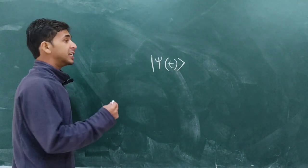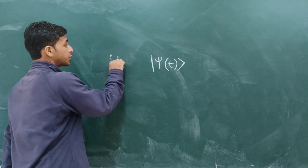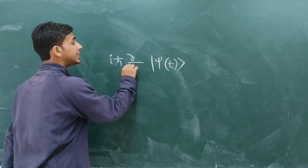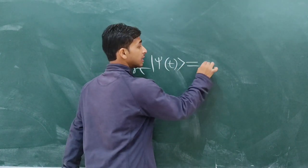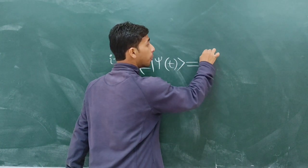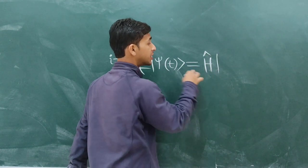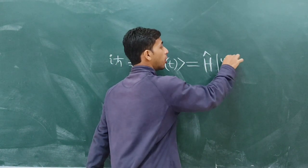And the equation says iℏ ∂/∂t of this state will be the same as Hamiltonian operator Ĥ operated on this same state ψ(t).